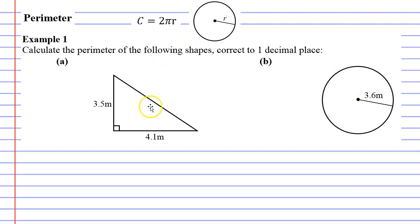So we'll start with the triangle and we need to calculate the perimeter correct to one decimal place. The problem with finding the perimeter of this particular triangle is that we've only been given two out of the three sides. We have not been given this side here.